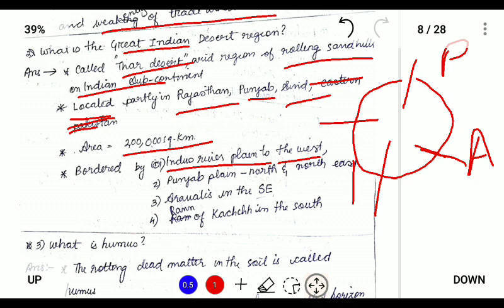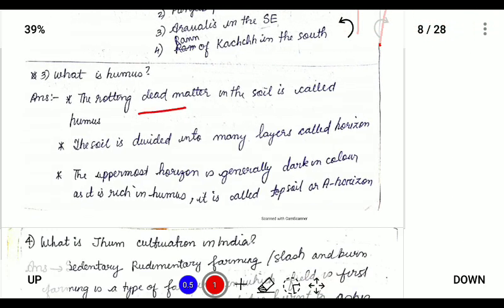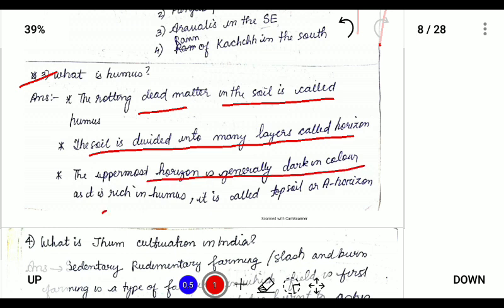What is humus? Humus is dead, rotting organic matter in the soil. It is very useful for growing crops. The soil is divided into many layers called horizons, and the upper layer is generally dark in color and rich in humus — also called the topsoil or A-horizon. The topsoil consists of black-colored soil which is very fertile.